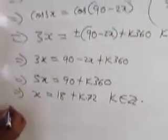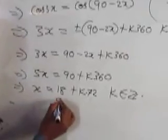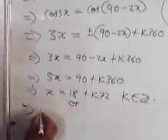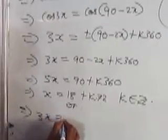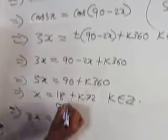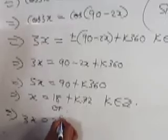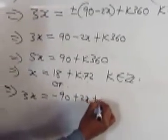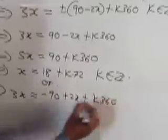Then we consider the negative part, which also implies that 3x equals minus, we are now playing the minus inside, -90 + 2x + k·360.